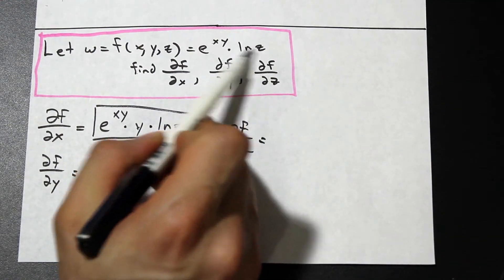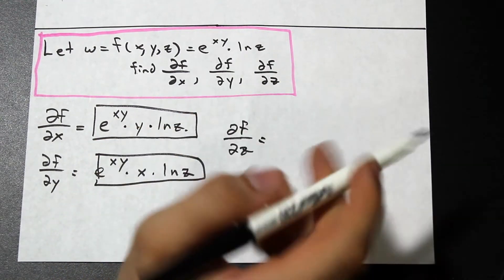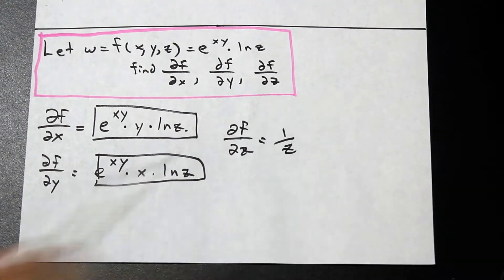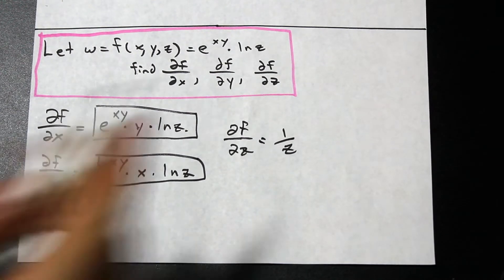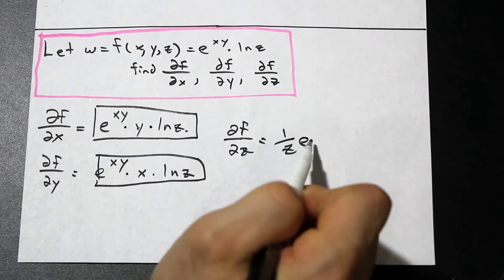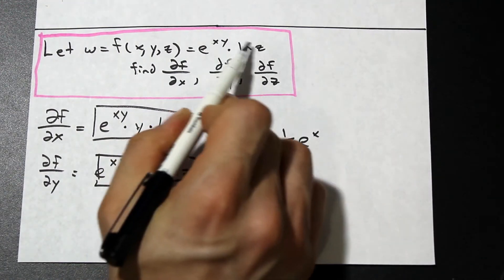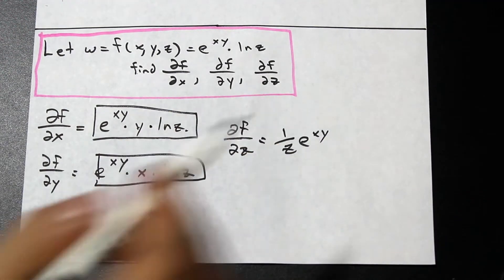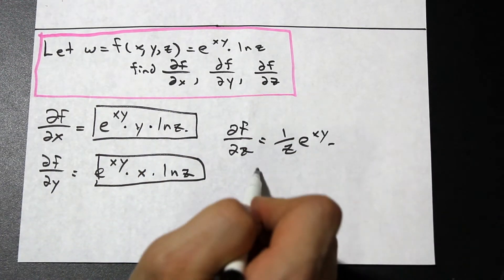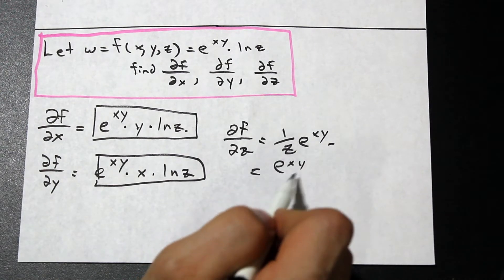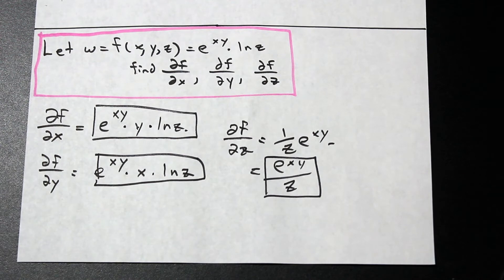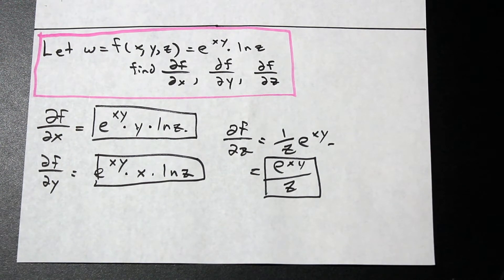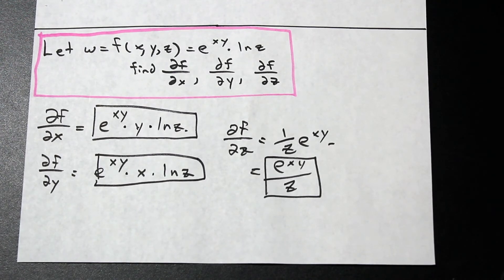Finally, let's do df/dz. Here we have a function of z: the derivative of ln(z) is 1/z. And e to the xy is a constant, so it stays as a factor. Therefore df/dz equals e to the xy over z. That's a really quick introduction to partial derivatives — nothing too tricky. Hope you enjoyed it — please like and subscribe!